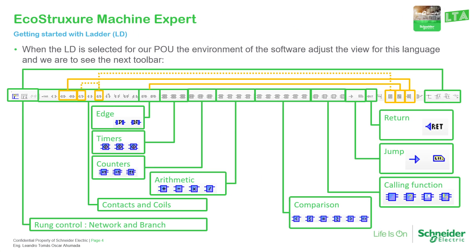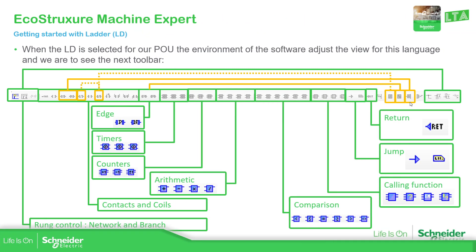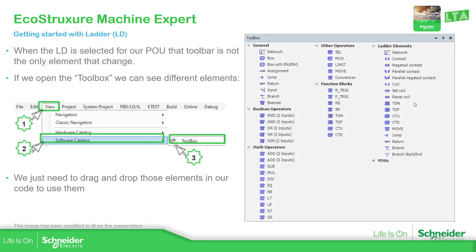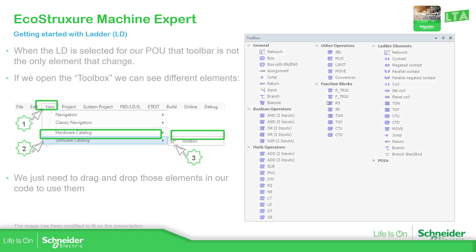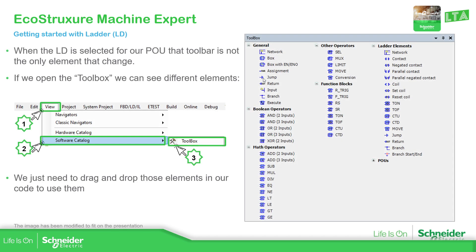Continuing with the toolbar, you also have the jump, the label, and the return. And here you have the same functionalities as before. Those elements on this toolbar are also accessible in the toolbox. If you're unable to see the toolbox, you should be able to access it through the View menu, then Software Catalog, and then the Toolbox should be enabled there.